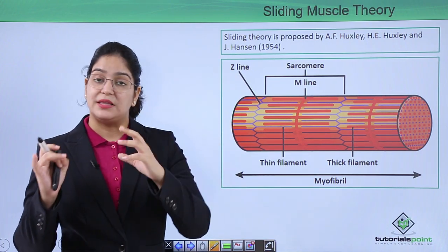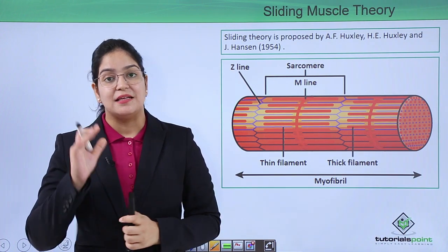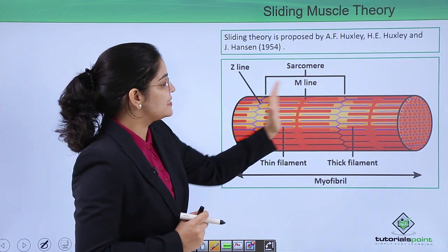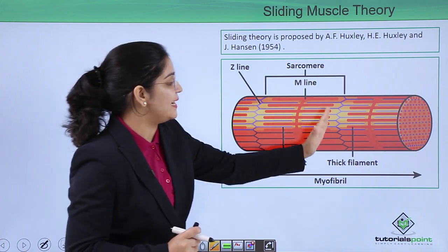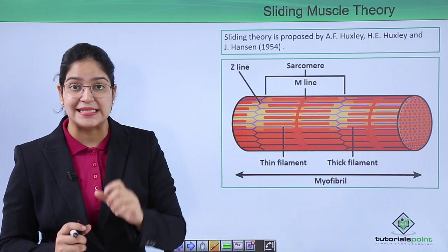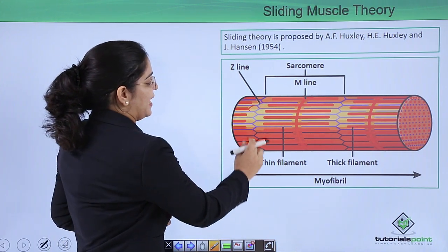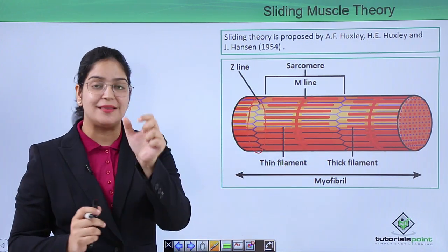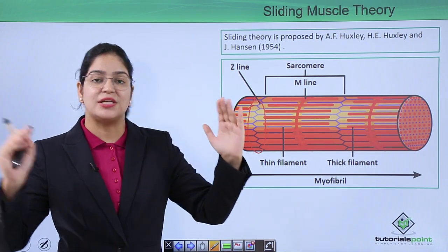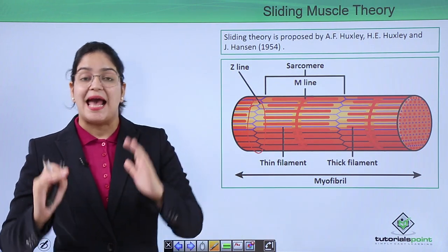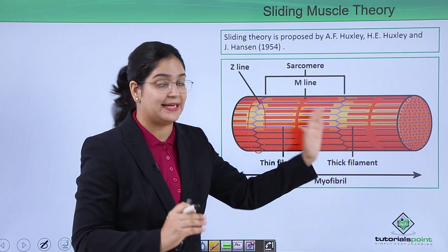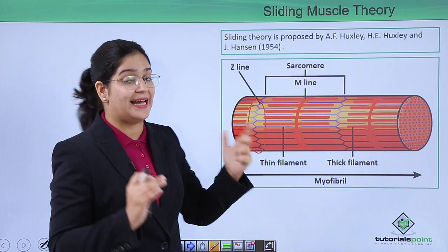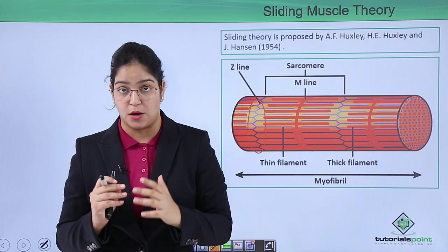Now let's learn how muscle contraction occurs through this sliding theory. In this structure, you can see that the sarcomere is the unit between the two Z lines. The Z line is a zigzag line present between the actin proteins. The structure between the Z lines is called the sarcomere, and the actual contraction occurs between these Z lines — that is, within this contractile unit, the sarcomere.